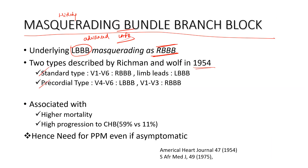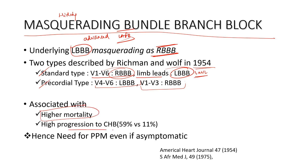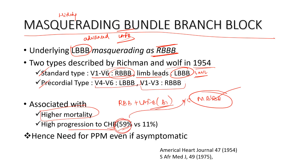Two types have been described — way back in 1954 — but the knowledge has not been popularized much. In the standard type, the precordial leads V1 to V6 appear like RBBB morphology, whereas limb leads one and AVL appear like LBBB. In the precordial type, leads V4 to V6 appear like LBBB and V1 to V3 appear like RBBB. This is important because masquerading bundle branch block is independently associated with higher mortality and higher progression — 59% of patients independently went into developing complete heart block within one year. Even if asymptomatic, it underlines the requirement for permanent pacemaker insertion.